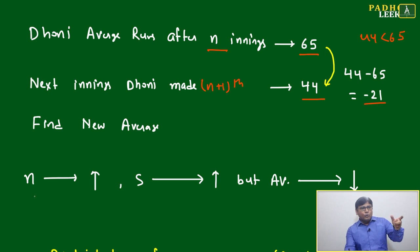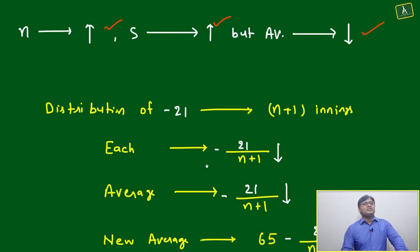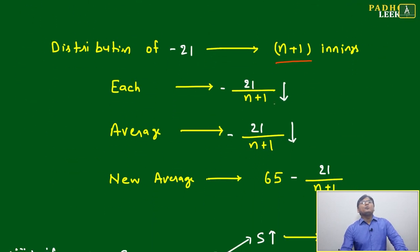In case one, the second situation is: if n is increasing, s will increase, but average will go down. How much it will go down? We can analyze in the same way. Distribution of minus 21 will happen to n+1 innings.